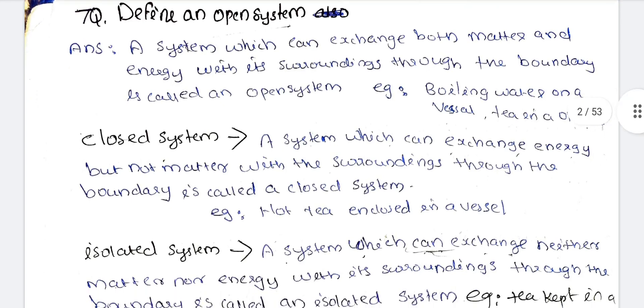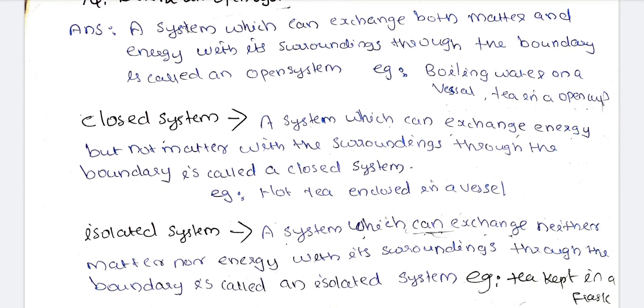A closed system is one which can exchange energy but not matter with the surroundings. For example, hot tea in a closed glass — matter will not be transferred to the surroundings, but energy (heat) will be exchanged. So in a closed system, energy is exchanged but matter is not.